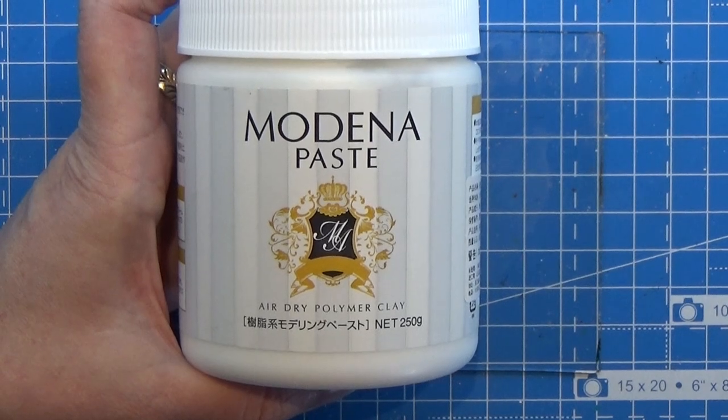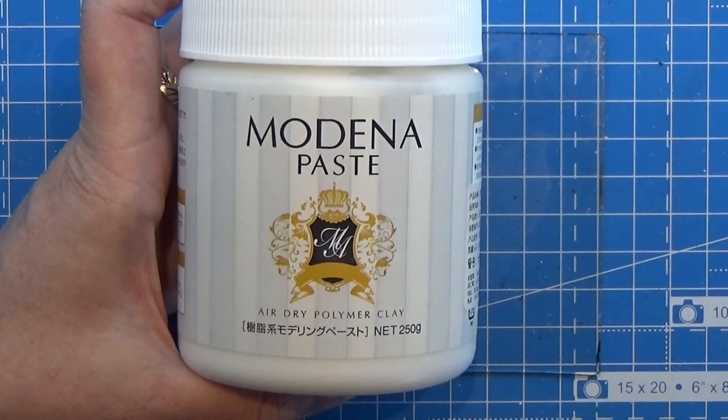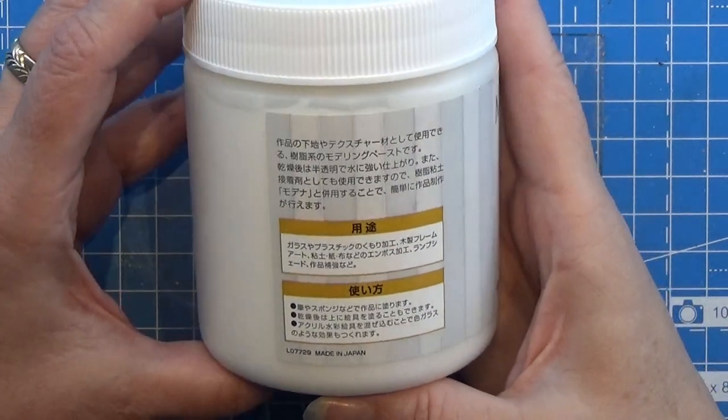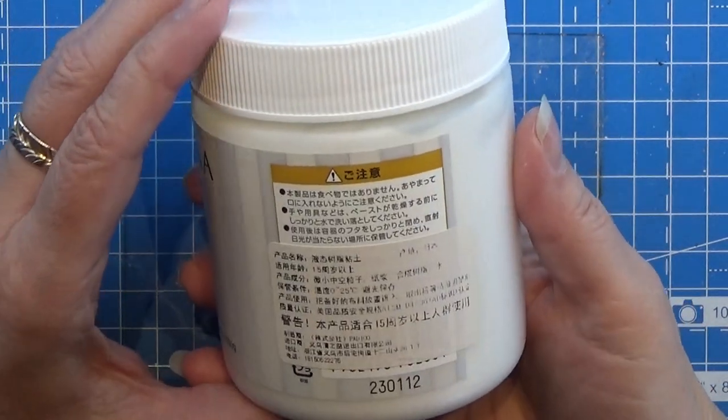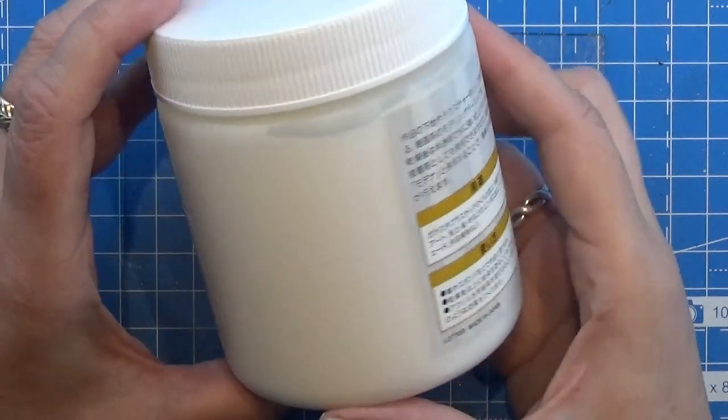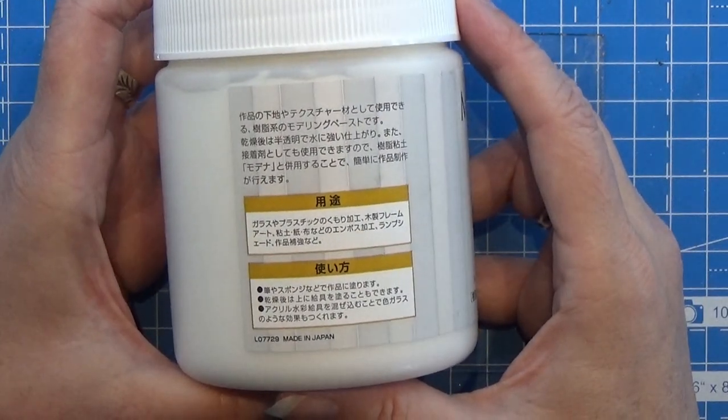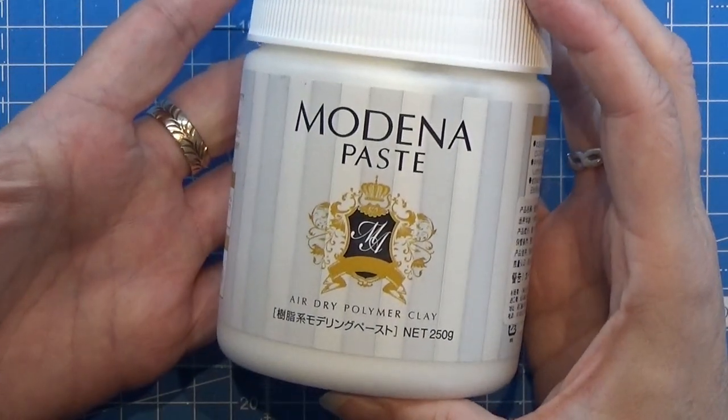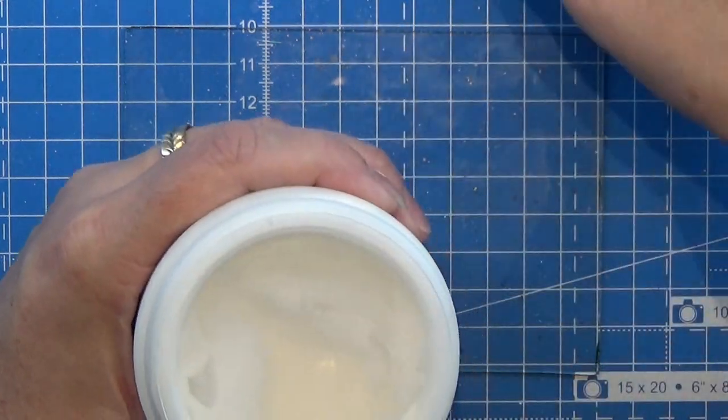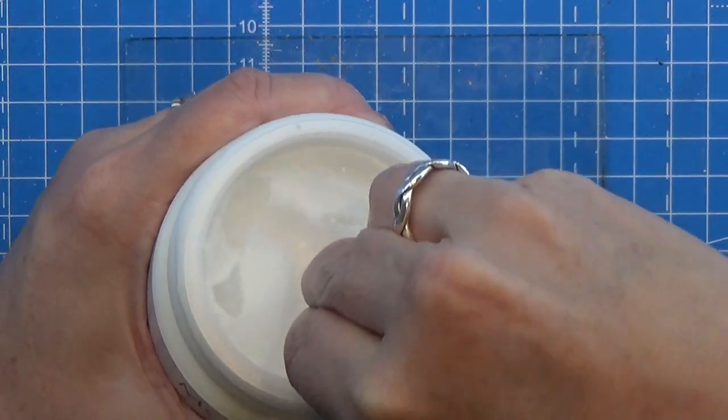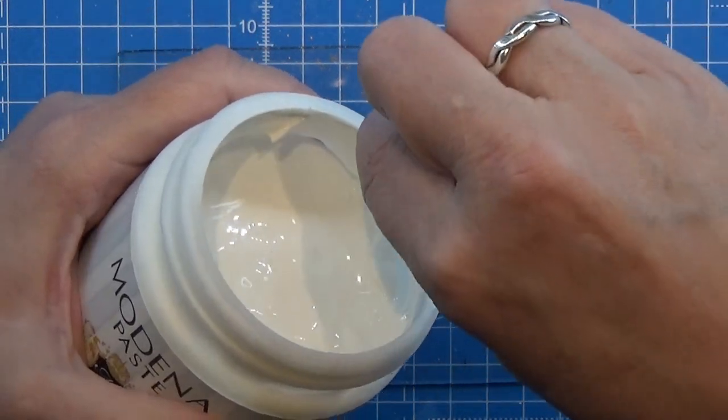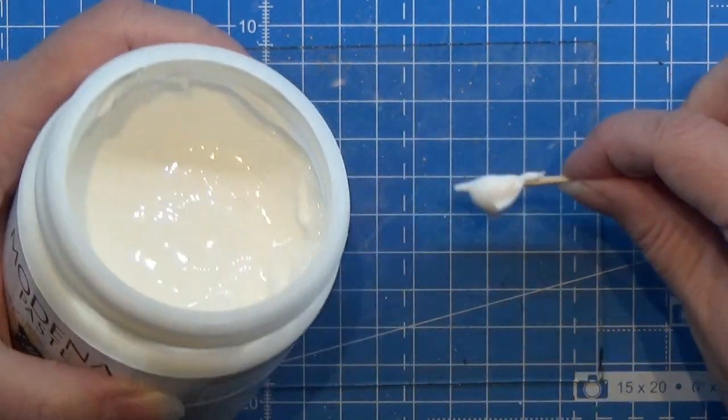I have this Modena paste that I used in a donut video. It's from China, ordered through Aliexpress and was quite expensive, but it's a fun product because it's an air dry paste and you can color it with paint or stuff like that. I'm going to make a few trials here with this medium just to see what it can and what it can't do.